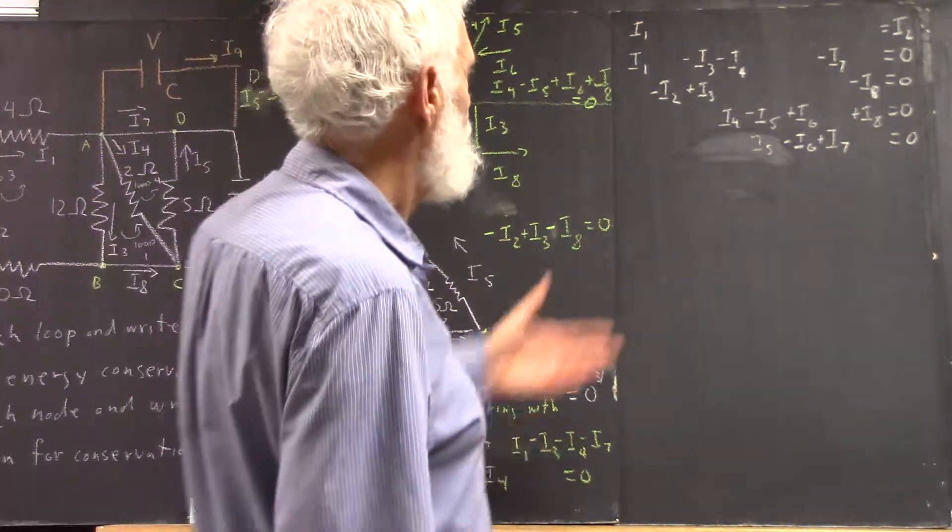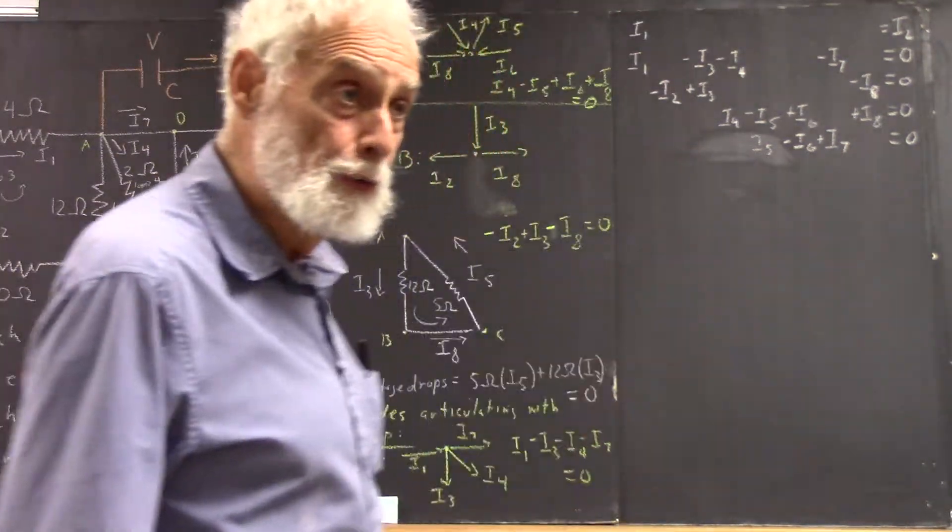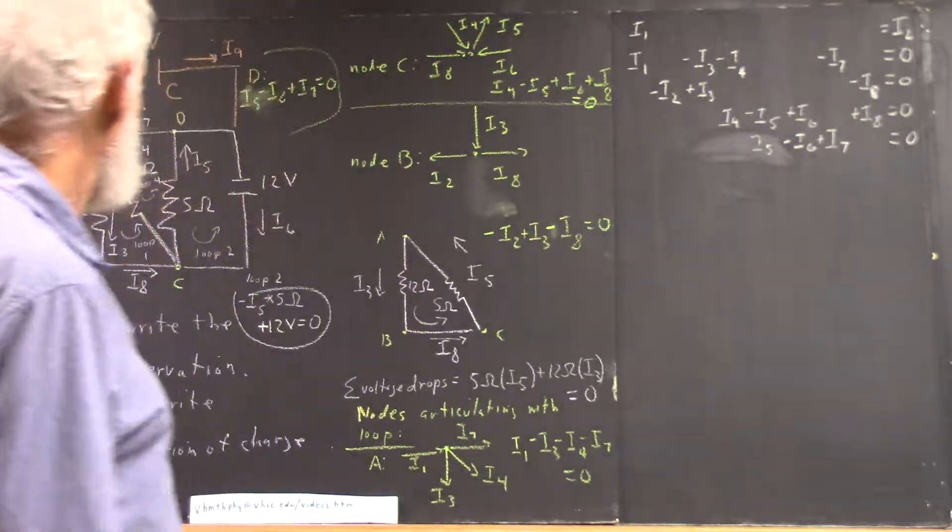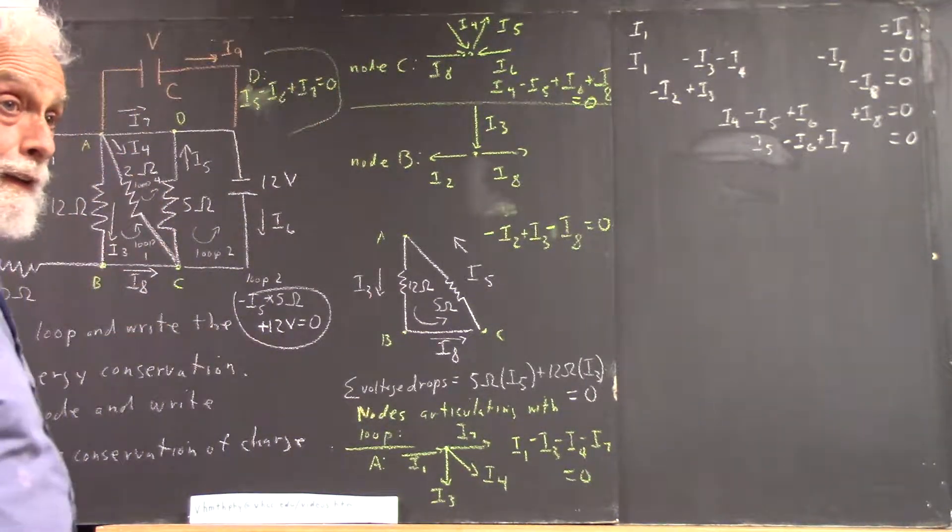Okay, so we've written the equations for the nodes, and there are four of them: A, B, C, and D.